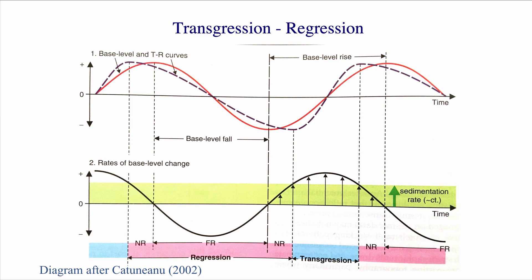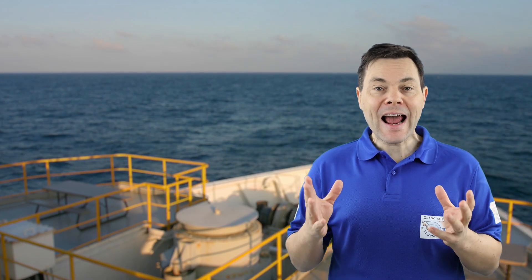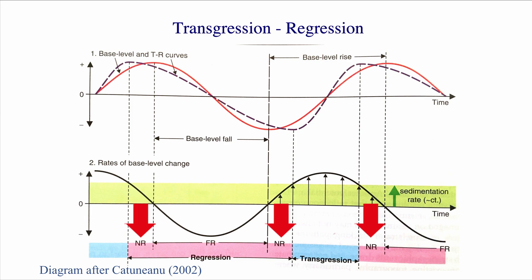There is also the case where the rate of accommodation creation is still positive — you're still creating accommodation — but the amount of accommodation you create is not as high as the amount of sediment you bring into the system. Here we have three cases where the rate of accommodation creation is equal to or lower than the rate of sedimentation. You're still rising base level and creating space, but you're filling that space faster than you're creating it. By definition, this is a normal regression — progradation of your system into the basin, without any erosion or base level lowering.